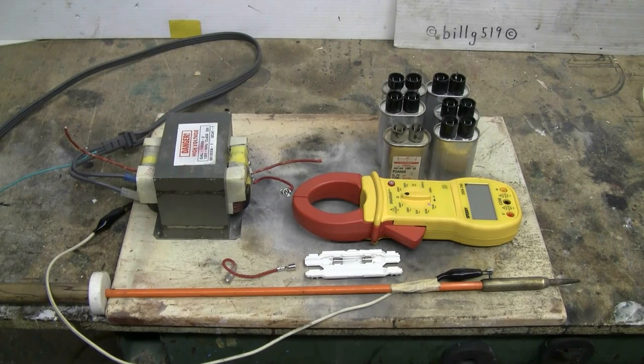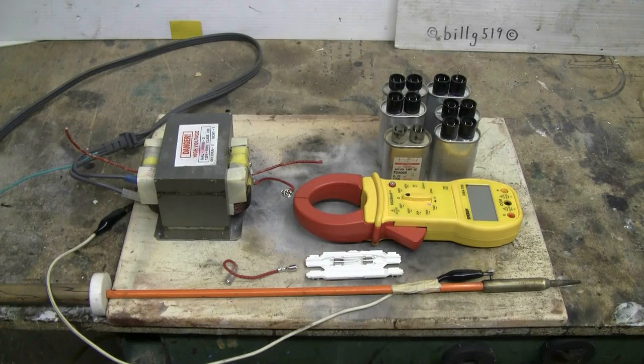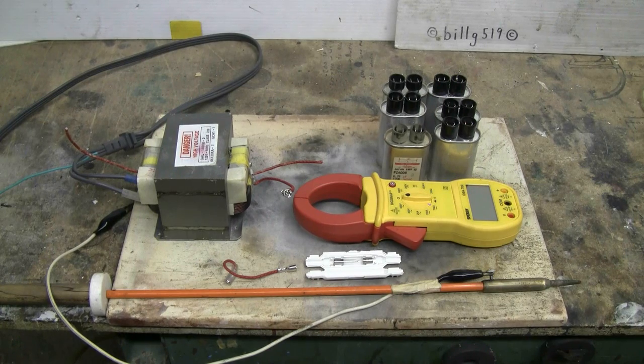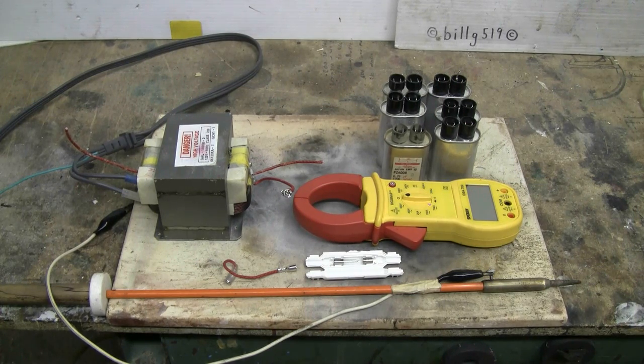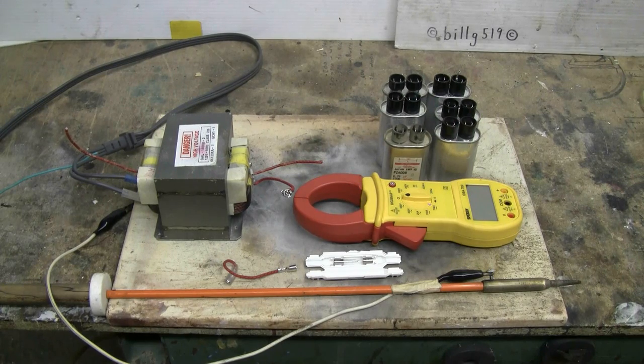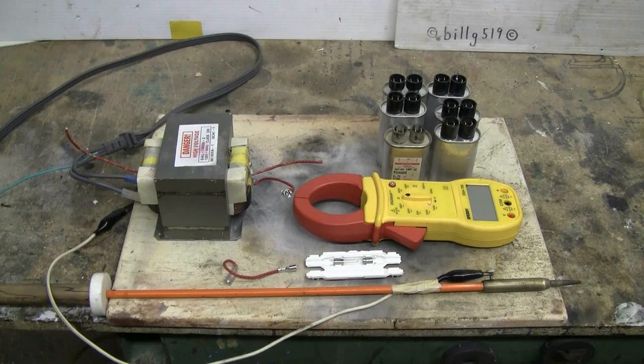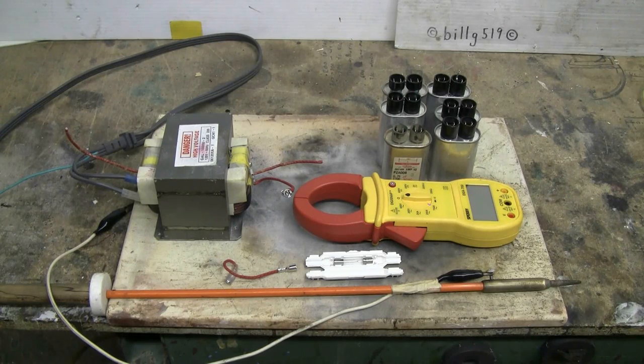In this video I'm going to take one microwave oven transformer and some microwave oven capacitors. We're going to see what kind of arcs we can get off one MOT with and without capacitors, and we'll use the clamp on ammeter to see what if any effect there is on the secondary side current.